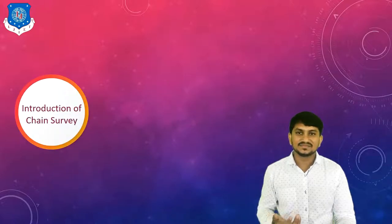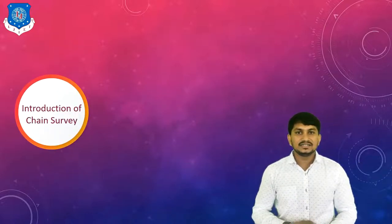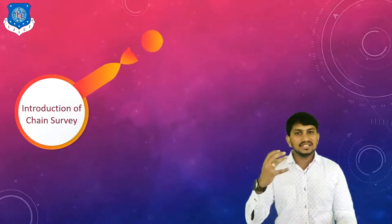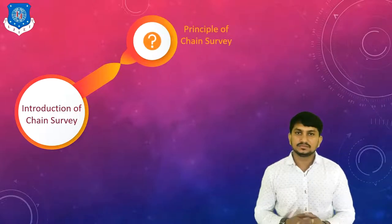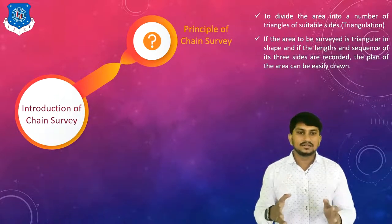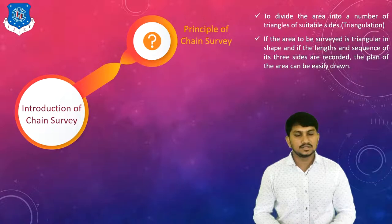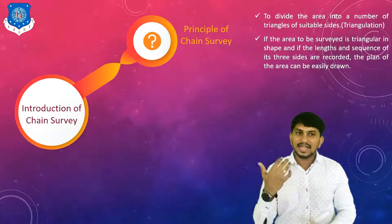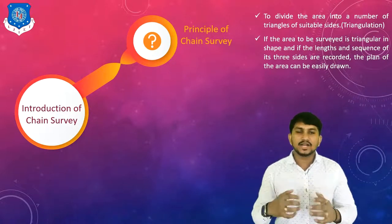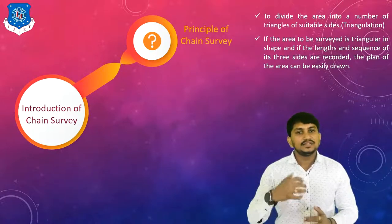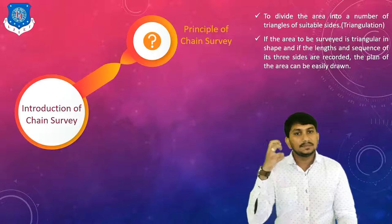Let's start with the introduction of chain survey. Chain survey is the survey of measuring distances on the ground. The main principle of chain survey is triangulation — it is used to divide the area into a number of triangles of suitable size. If the area is triangular in shape and the length and sequence of its three sides are recorded, the area can be easily drawn by chain. This is called the principle of chain survey.